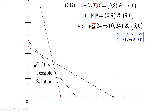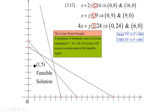The profit the company makes is $60 per smart TV and $40 per UHD TV. So we want to find the number of smart TVs X and UHD TVs Y that maximizes our profit. To do that, we use what is called the corner point principle. Write and highlight this: a maximum or minimum value of a linear expression P = AX + BY, if it exists, will occur at a corner point of the feasible region.